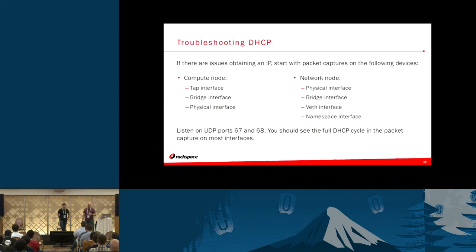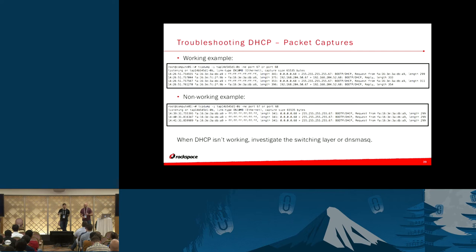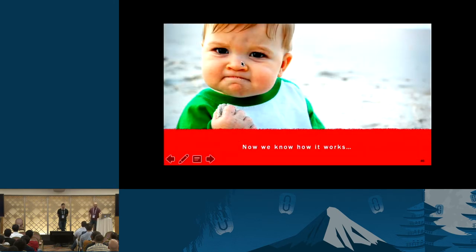Unless you're running overlay network types, those packets may be encapsulated in a VXLAN or GRE header. In a working example, performing a tcpdump on the tap interface of an instance shows the full DHCP cycle. In a non-working example, running the same packet capture shows only the instance sending out DHCP discover messages that go unanswered. In this test case, an interface had been moved out of the bridge to force a failure — not likely in production, but it shows what you might see when there's an agent issue.